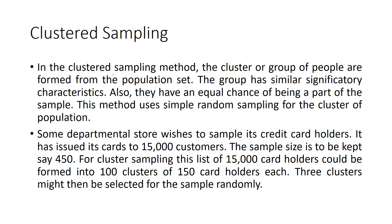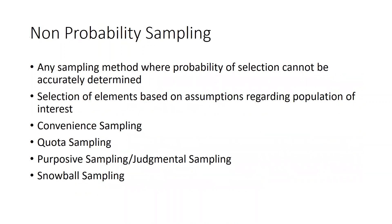Cluster sampling is another type of probability sampling. For example, a departmental store with 15,000 credit card customers wants a sample of 450. The list of 15,000 card holders could be formed into 100 clusters of 150 card holders each, and then three clusters might be selected for the sample. This is known as cluster sampling.